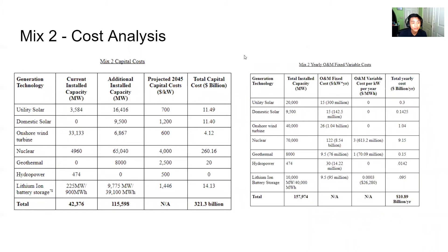For the cost analysis of Mix 2, total capital costs came out to roughly $221.3 billion, and yearly O&M fixed and variable costs came out to roughly $11 billion per year. The high capital cost was expected due to nuclear energy's relatively high capital cost compared to other renewable technologies such as solar or wind.